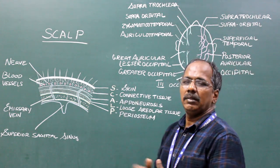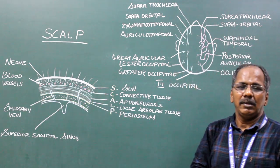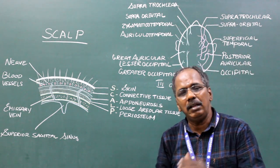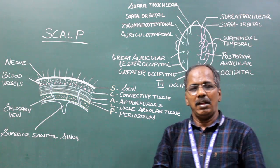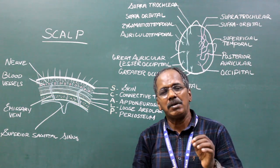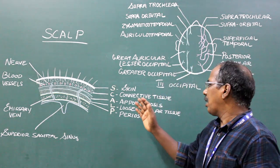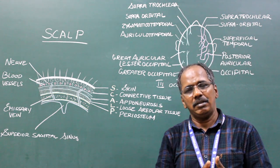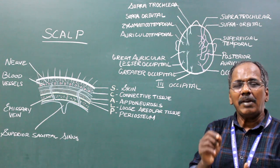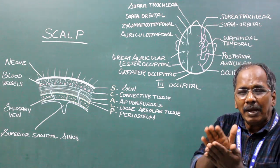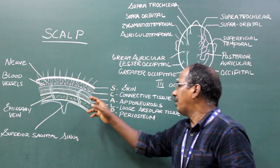Skin. The skin of the scalp is thick and it is rich in hair follicles and sebaceous glands. Hence, it is the most common site of sebaceous cysts. Connective tissue or superficial fascia is made up of dense fibrous connective tissue which binds the skin to the underlying aponeurosis.